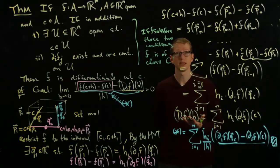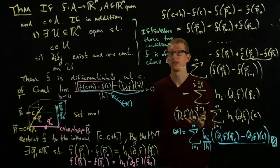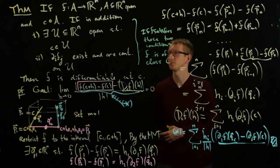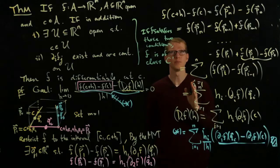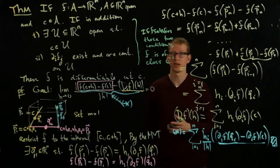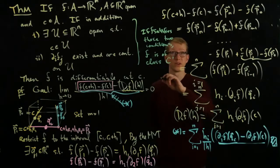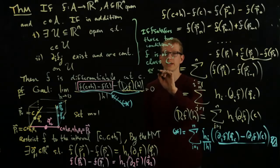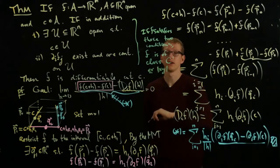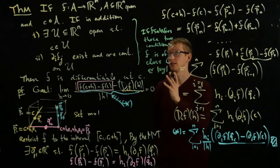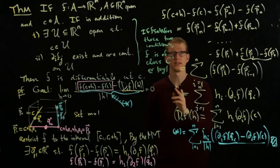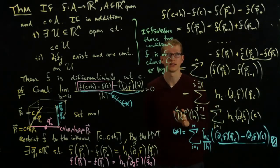We already know this from the single-variable case: the topologist's sine curve is differentiable but not continuously differentiable. With several variables, even simpler functions can be differentiable but not continuously differentiable. For example, you can check that the function |x·y| — the absolute value of x times y — is differentiable but not continuously differentiable. I'll leave that as an exercise.